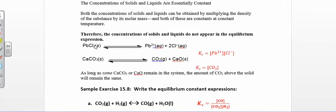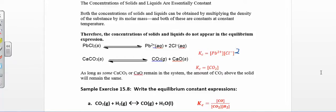For this first one, you have a solid as a reactant. You just do the concentration of lead times the concentration of the chloride ion — and that needs to be squared, raised to the second power. Down here you have just the concentration of carbon dioxide. You don't include this solid or this solid either. As long as some of the solid is there, the equilibrium will exist, but you don't need to include it in the equilibrium constant expression.